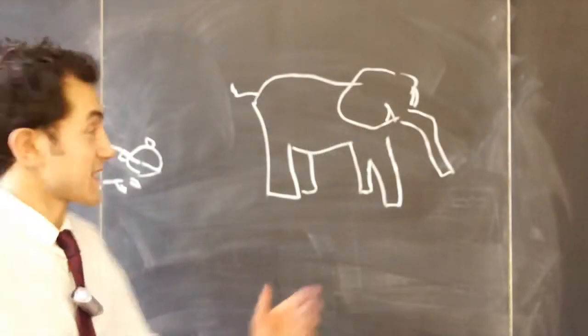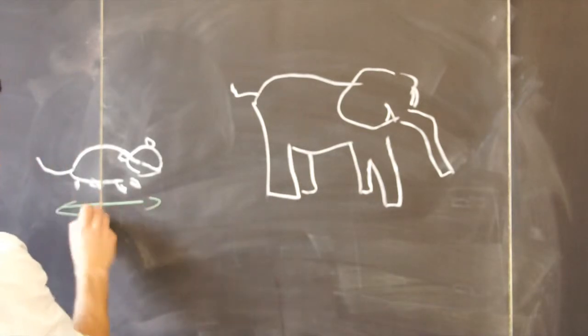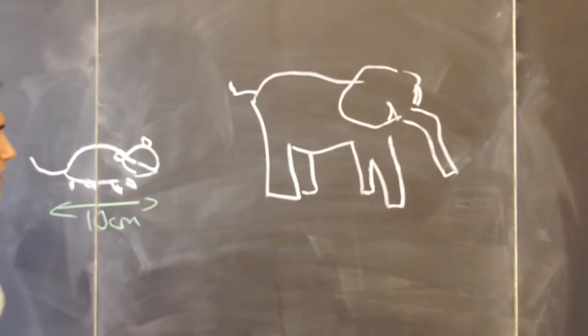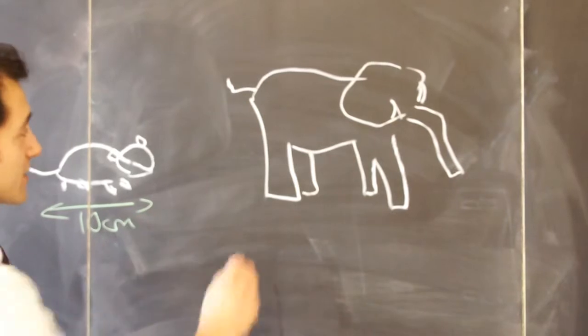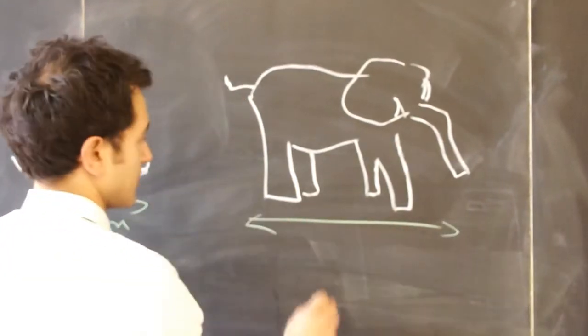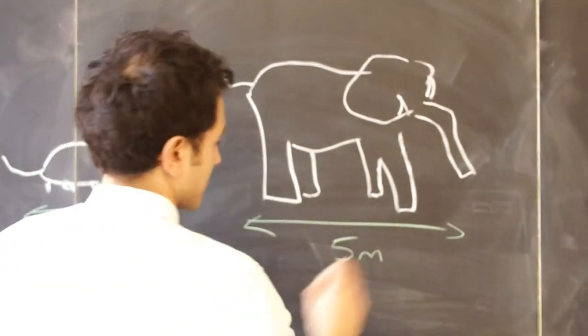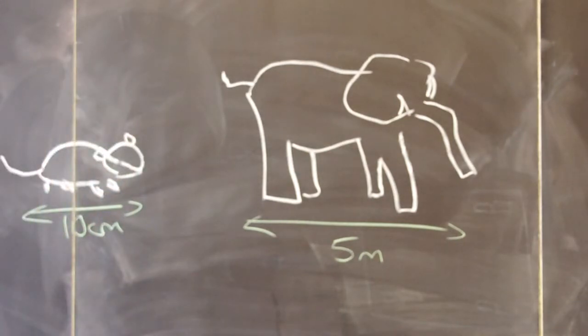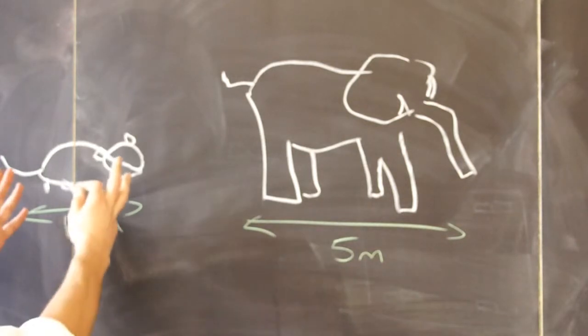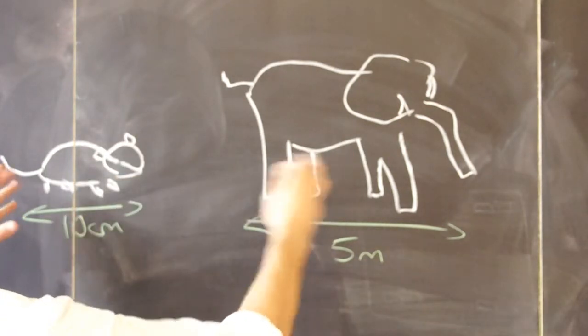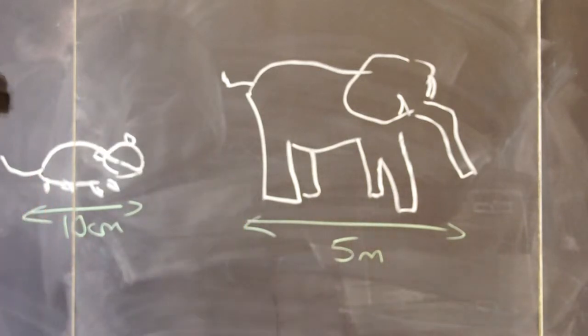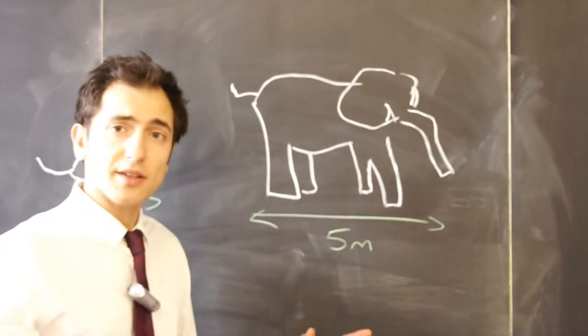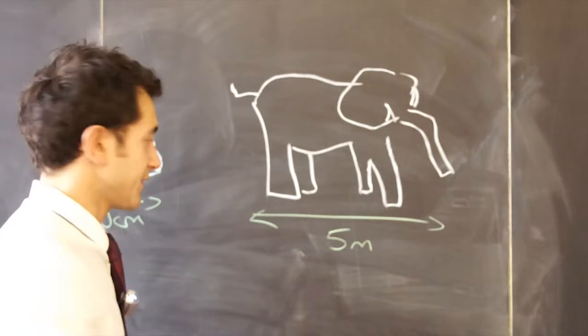So your average mouse is, say, ten centimetres wide. An elephant, much wider, maybe up to five metres. That means that an elephant is 500 centimetres, so 50 times as long. And what we're going to imagine is blowing this mouse up, that it's 50 times as long, 50 times as high, 50 times as wide. That means that the lengths have been multiplied by 50.